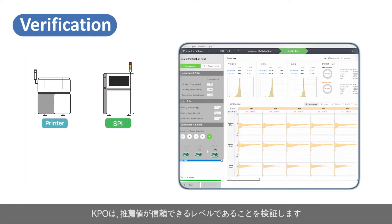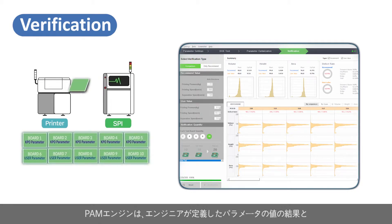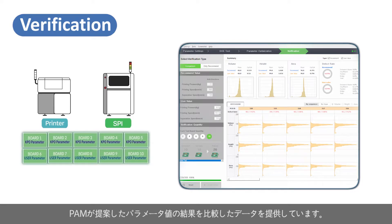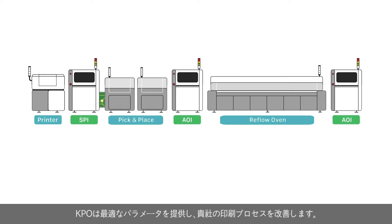KPO verifies these settings will be suitable for production. The PAM engine provides users with a comparison between the print results, user-defined parameters, and PAM-suggested parameters. Designed to optimize the production process, KPO provides feedback to improve the print process with optimal parameters.